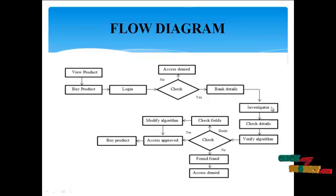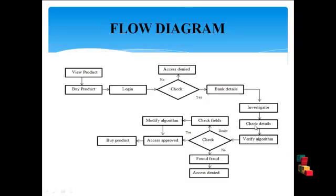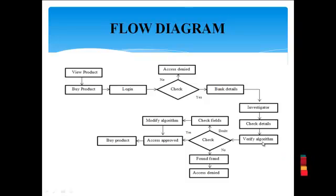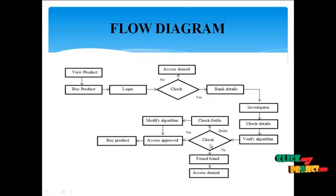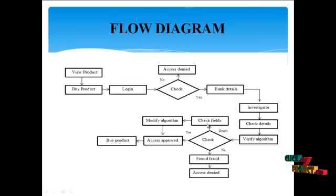The investigator then investigates the bank details. The check details step uses a verify algorithm that produces three types of results: approve, decline, or waitlisted. If approved, the user is approved for the process. If fraud is detected, the process is declined. If doubted and waitlisted, feedbacks are checked — if the condition is satisfied, approval is given by the modify algorithm.